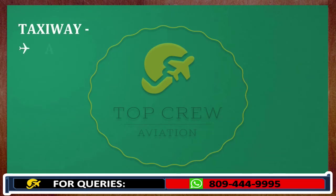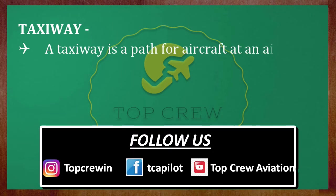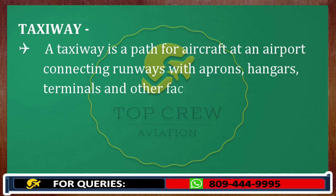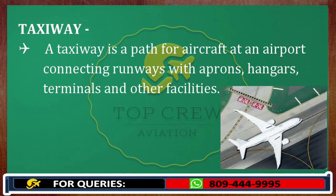Next is taxiway. What is taxiway? Taxiway is a path for aircraft at an airport connecting runways with aprons, hangars, terminals and other facilities. It is just like we drive our car and get connected with highways via link roads. So through these link roads we get connected with highways — that's what taxiways are here.